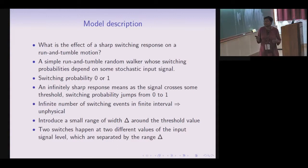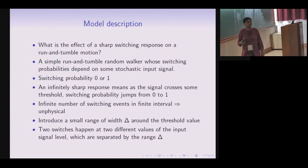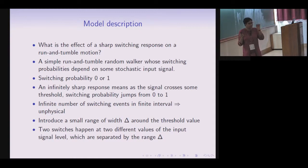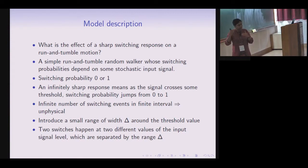This brings us to our question: what happens when a run-and-tumble random walker shows a very sharp switching response to some stochastic input signal? We study a simple run-tumble random walker model where switching probabilities between run mode and tumble mode depend on a stochastic signal. For the simplest case, switching probability takes only two values: zero and one. An infinitely sharp response means a switch occurs as soon as the input signal crosses a threshold. However, if the signal shows tiny fluctuations around the threshold, there would be an infinite number of switches, which is not physical.